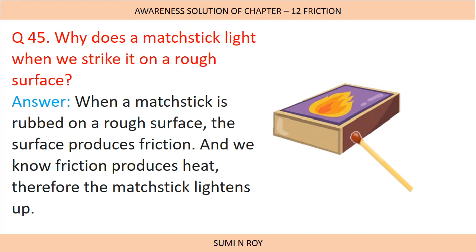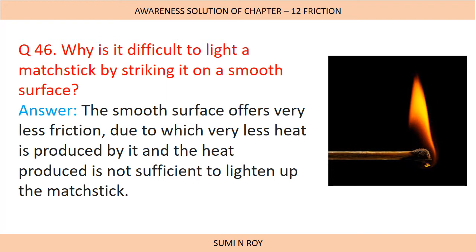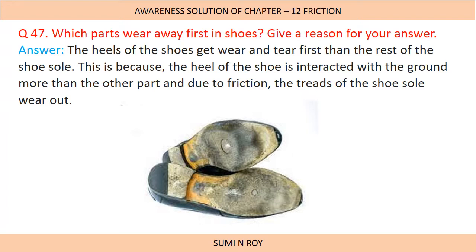Next question: Why does a matchstick light when we strike it on a rough surface? We have to remember that friction produces heat, and a matchstick is lit up due to the heat produced during friction. When a matchstick is rubbed on a rough surface, the surface produces friction and we know friction produces heat, therefore the matchstick lights up. The next question is similar: why is it difficult to light a matchstick on a smooth surface? Because the smooth surface offers very little friction, very little heat is produced, and the heat produced is not sufficient to light the matchstick.